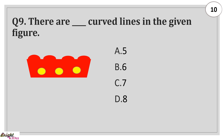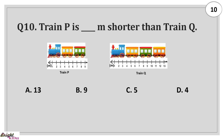Find the missing figure to complete the given figure pattern. There are Dash curved lines in the given figure. Answer: Seven. Three circles and 4 above are there, total seven. Train P is Dash meters shorter than train Q. Answer: 4. 13 minus 9 is 4.